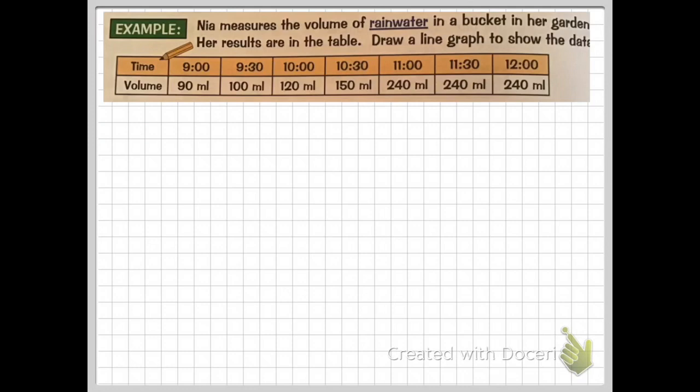So Nia measures the volume of rainwater in a bucket in her garden. Her results are in the table below. Draw a line graph to show the data. So I just want you to notice here: time, again another infinite piece of data. So time can go on forever and also volume can go on forever. So you could have something that's 240 milliliters or you could have something that is 200 million milliliters - it can go on forever.